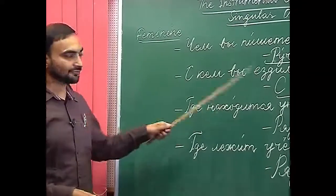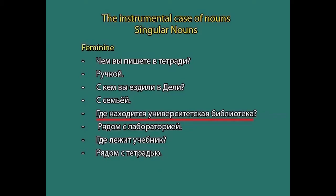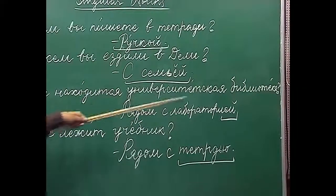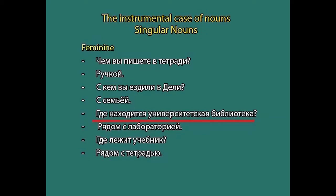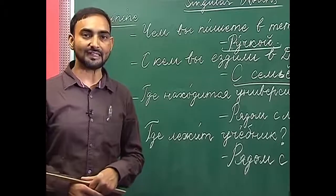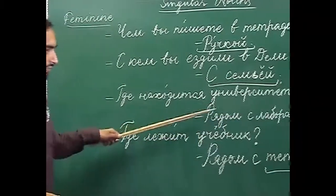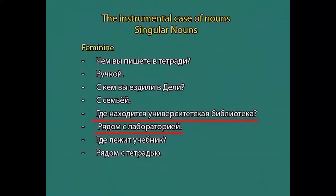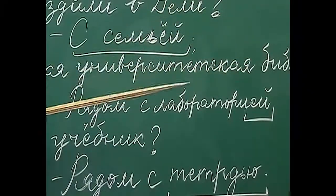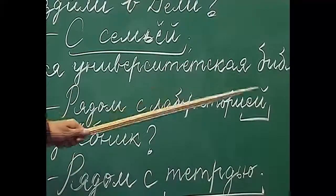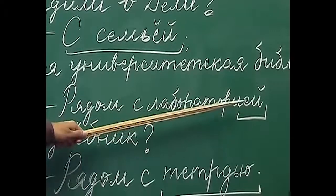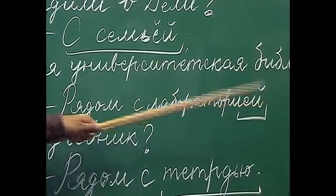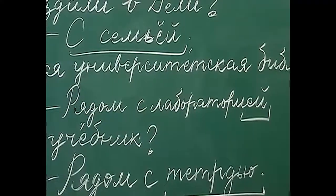The next example with a different ending: 'где находится университетская библиотека?' — where is the university library situated? If we have to use 'лаборатория' (laboratory), which ends with -ия: рядом с лабораторией — next to the laboratory. Университетская библиотека находится рядом с лабораторией. For nouns with -ия ending, we drop -я and add -е and е краткое: лаборатория becomes лабораторией. Similarly, фотография becomes фотографией.